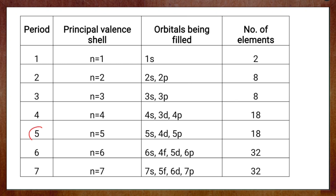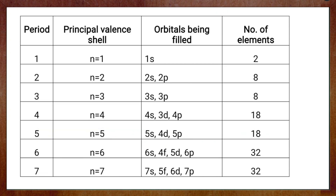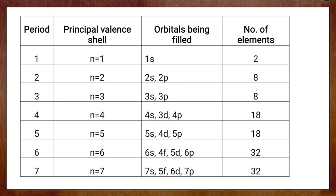For the fifth period, n=5, the orbitals filled are 5s, then 4d, then 5p, and we have 18 elements. For the sixth period, the principal valence shell n=6, and the orbitals filled are 6s, then 4f, then 5d, then 6p, giving 32 elements. For the seventh period, n=7, the orbitals filled are 7s, 5f, 6d, and 7p — filled according to increasing order of their energies — and the seventh period also has 32 elements.